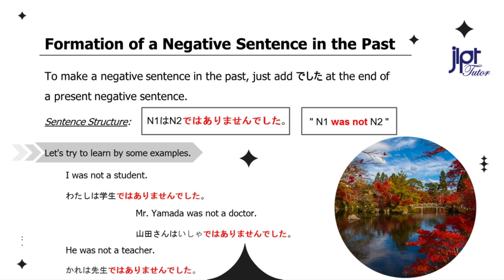Formation of a negative sentence in the past. To make a negative sentence in the past, just add deshita at the end of a present negative sentence. Sentence structure: N1 wa N2 de wa arimasen deshita. You can replace desu with de wa arimasen deshita to make the past tense negative. Let's try to learn from some examples. I was not a student: Watashi wa gakusei de wa arimasen deshita. Mr. Yamada was not a doctor: Yamada-san wa isha de wa arimasen deshita.